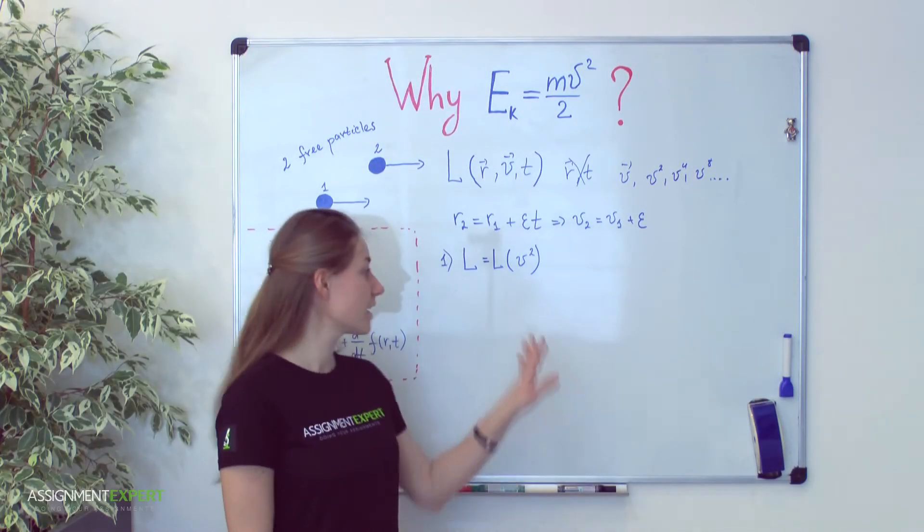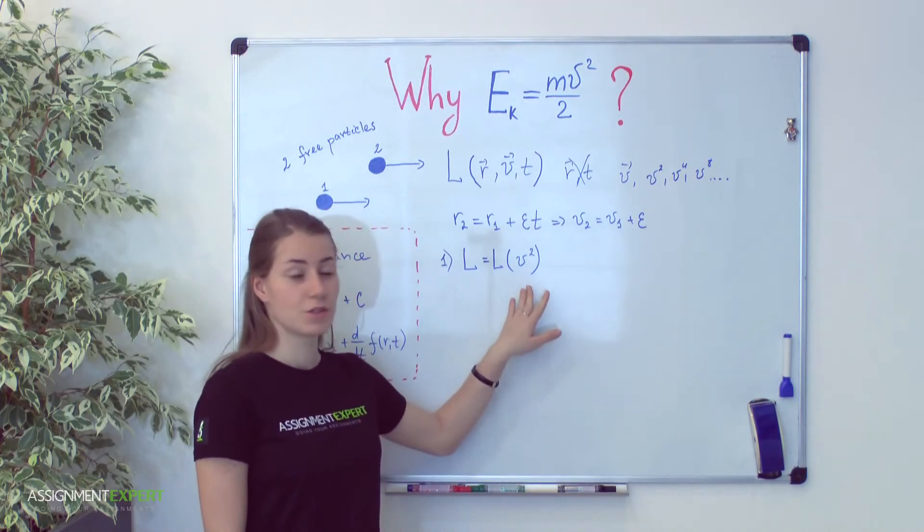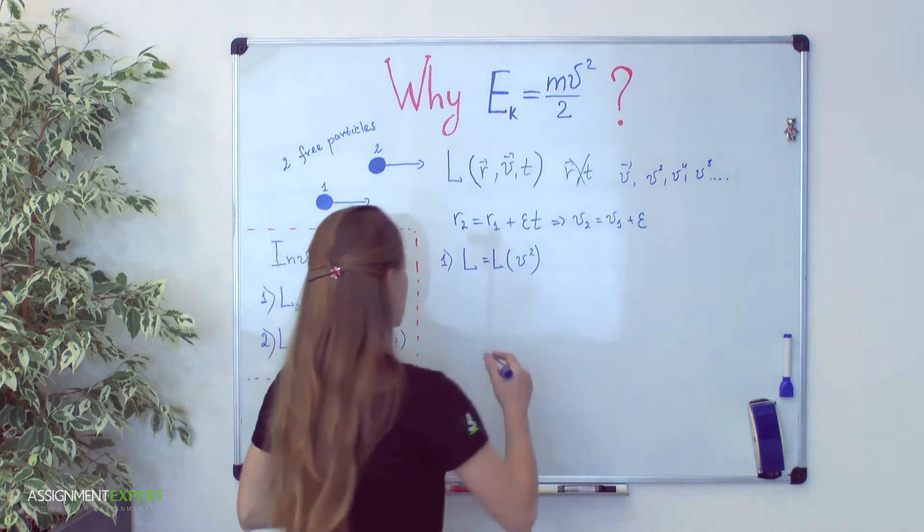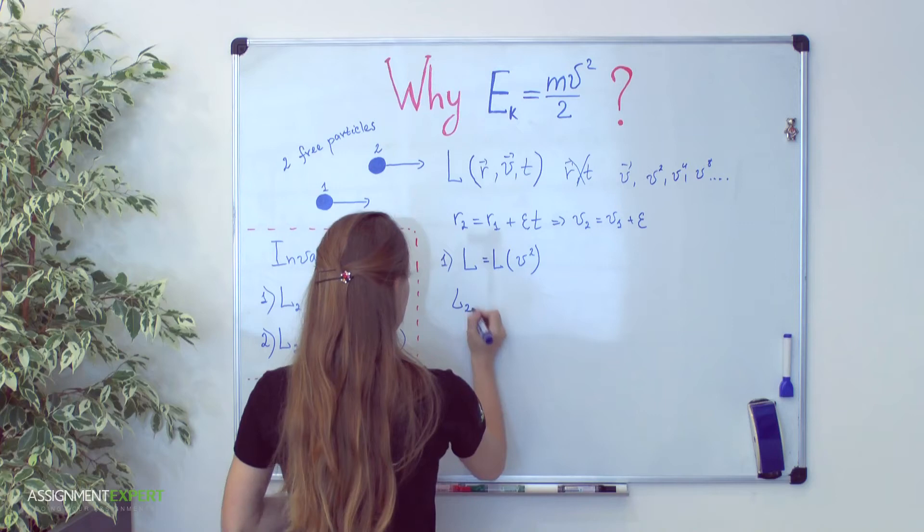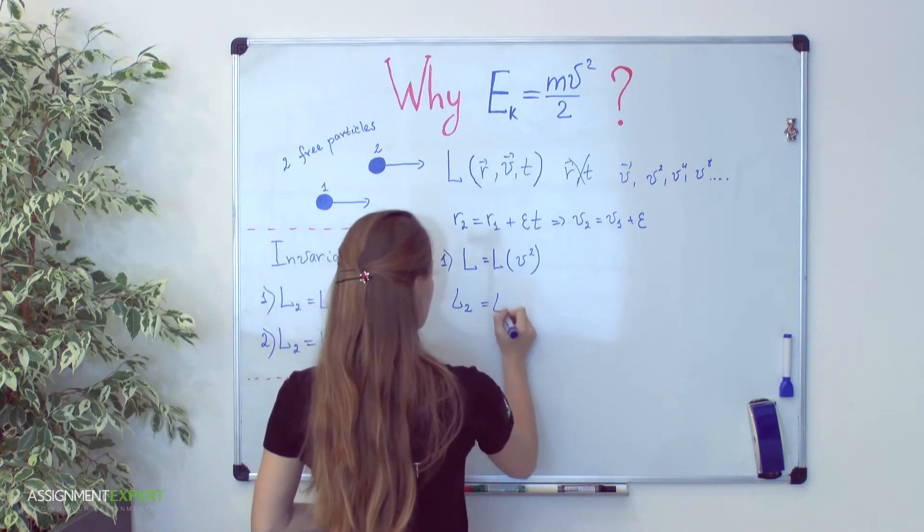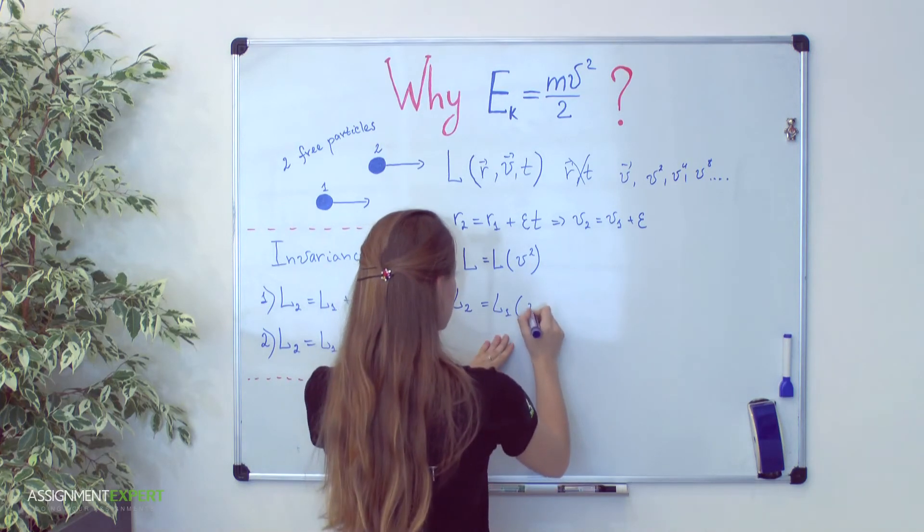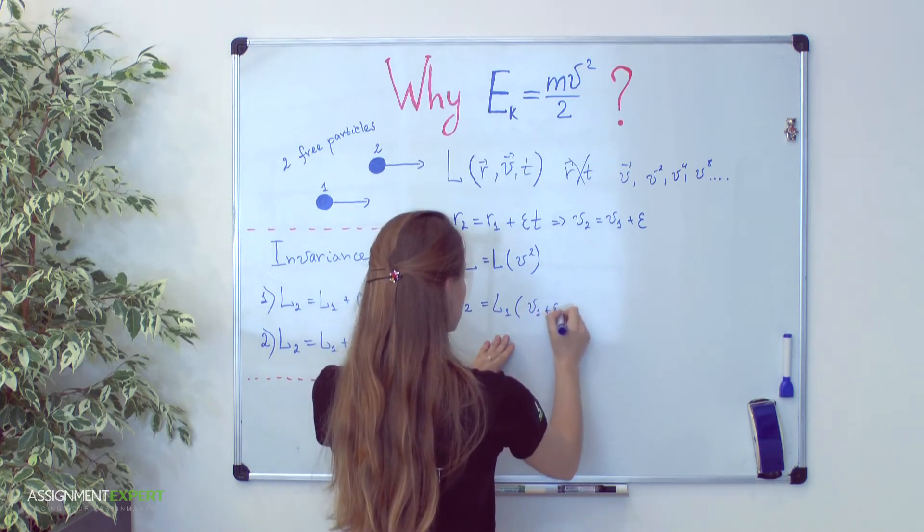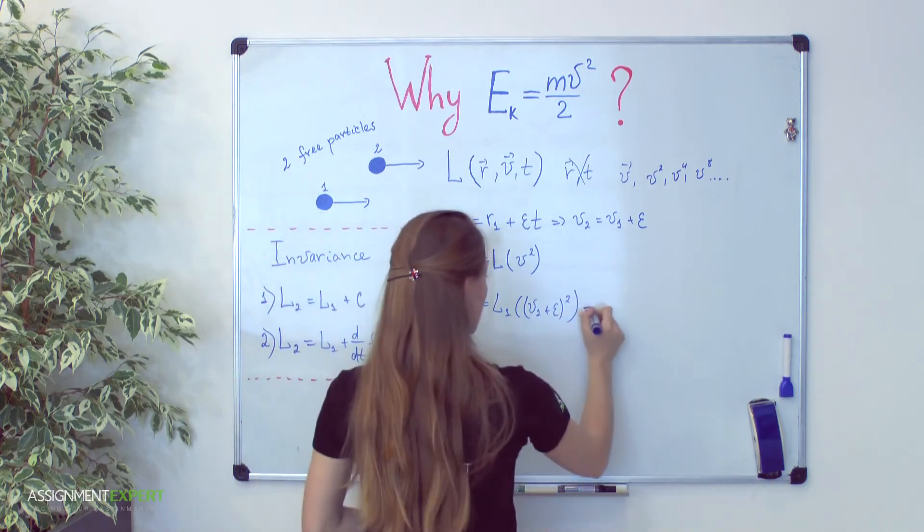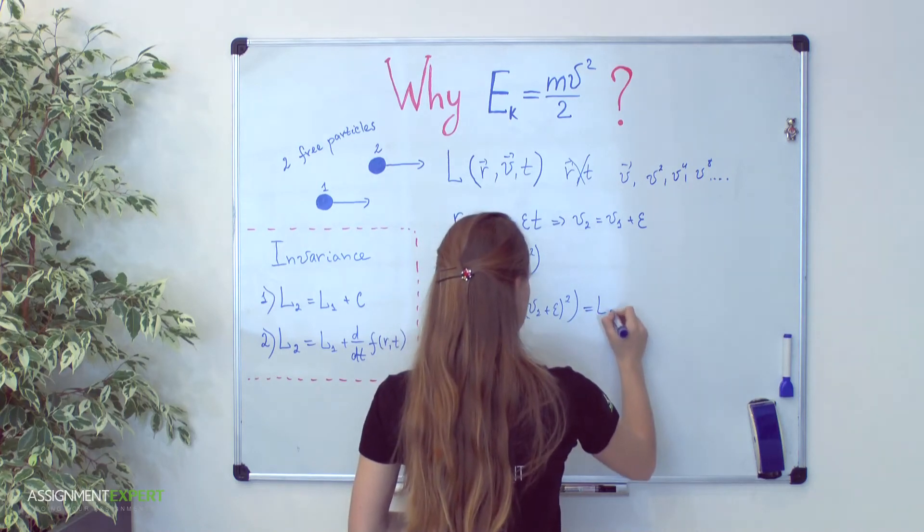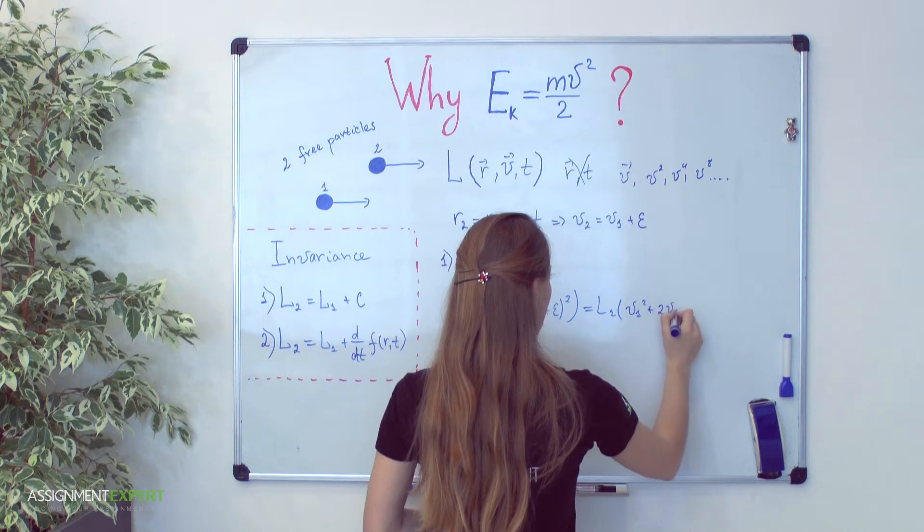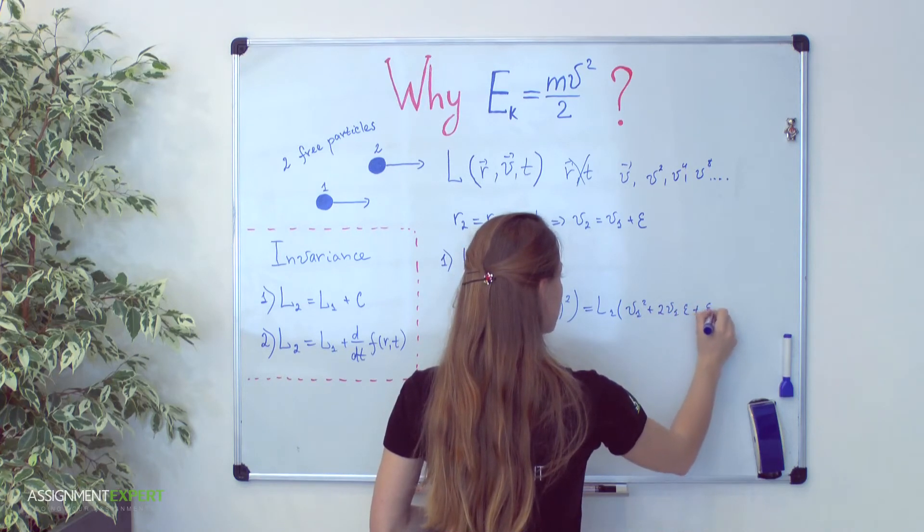First, let's consider the second power of velocity and do the Galilean transformations for such kind of Lagrange function. Let's write down that our second Lagrange function, say for the second particle, is the first Lagrange function and velocity v1 plus epsilon square. Because it's our v2 square. Let's rewrite this in the following way. It's v1 square plus 2 v1 epsilon plus epsilon square.